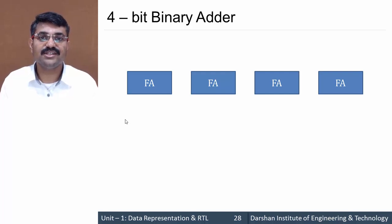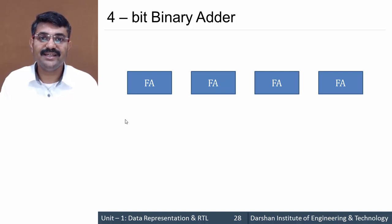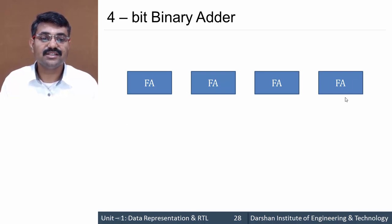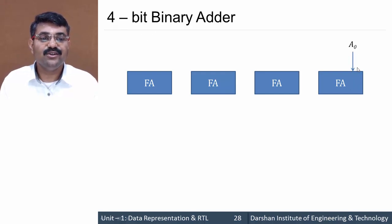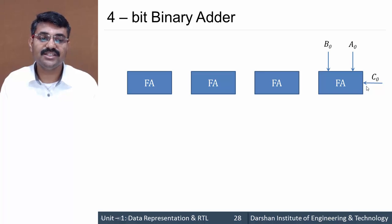A full adder is a circuit which performs the addition of 3 bits, producing a sum output and a carry output. For a 4-bit binary adder, we require four full adders. The first full adder handles A0 plus B0 plus C0, where the initial carry-in C0 is 0.